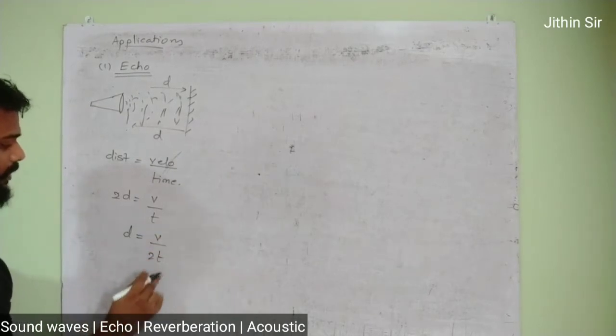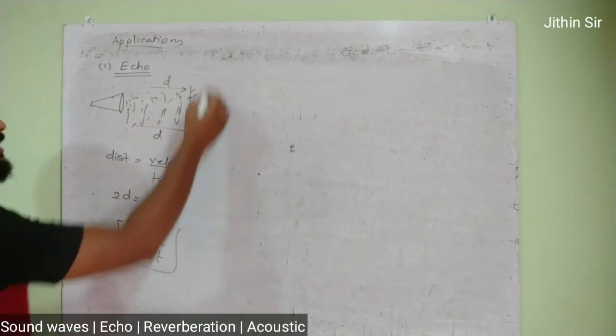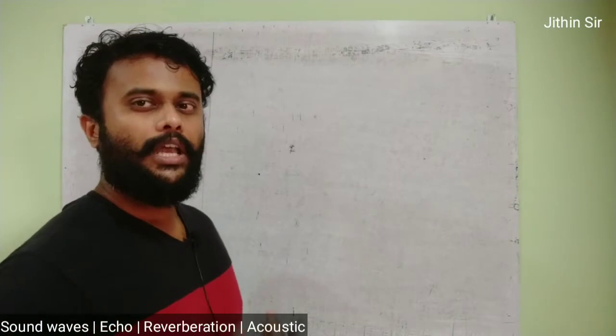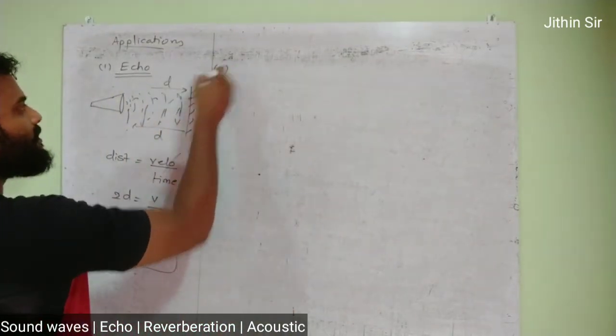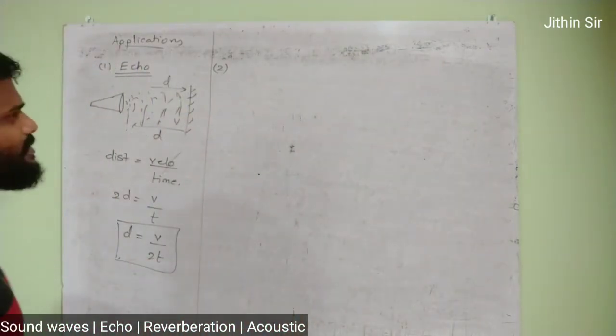The distance between the speaker and the wall or maybe two mountains will be v upon 2t. You can measure t with a watch, you know v, substitute the values and calculate the distance. This is how we can calculate the distance between any two spots with the help of echo.